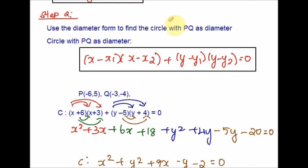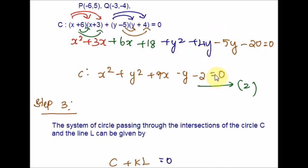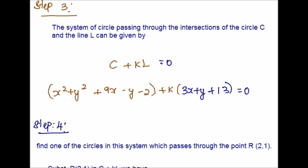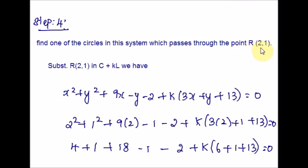Next, we use the diameter form to find the circle with PQ as diameter, plugging in P and Q again to get equation C — let this be equation number 2. Note that this step requires careful attention to signs and FOIL application, as many students make mistakes here. Step 3 is finding the system of circles passing through the intersection of C and line L, expressed as C + kL, substituting equations 1 and 2. Then substitute point R (2, 1) into C + kL and solve for k.